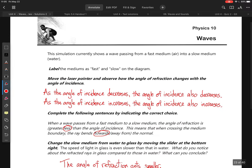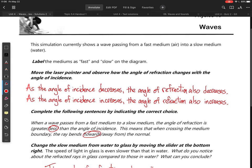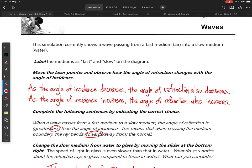So you are asked to move the laser pointer and observe how the angle of refraction changes with the angle of incidence. And I have summarized the changes here. As the angle of incidence decreases, the angle of refraction also decreases. And as the angle of incidence increases, the angle of refraction also increases.